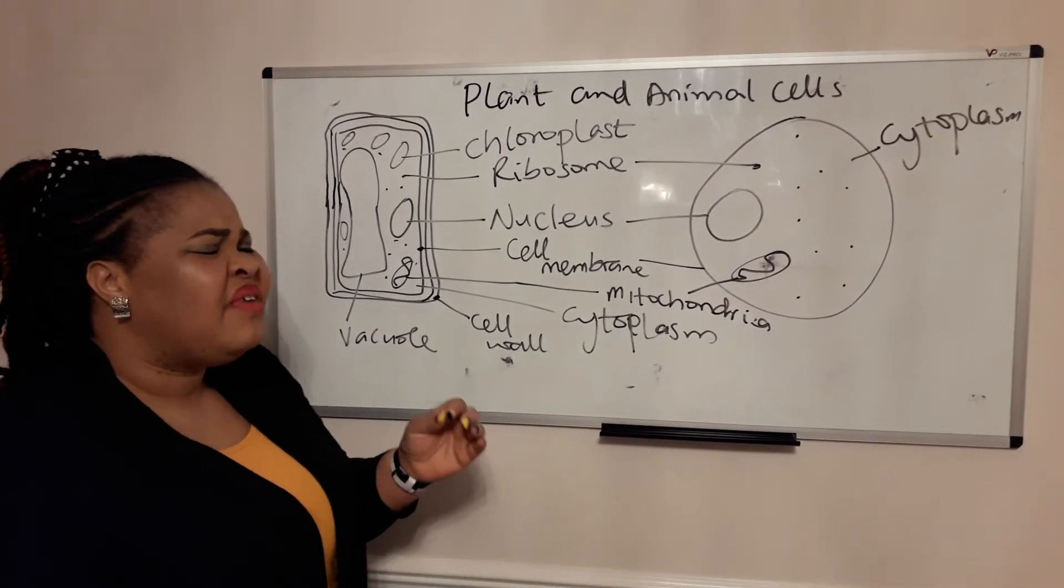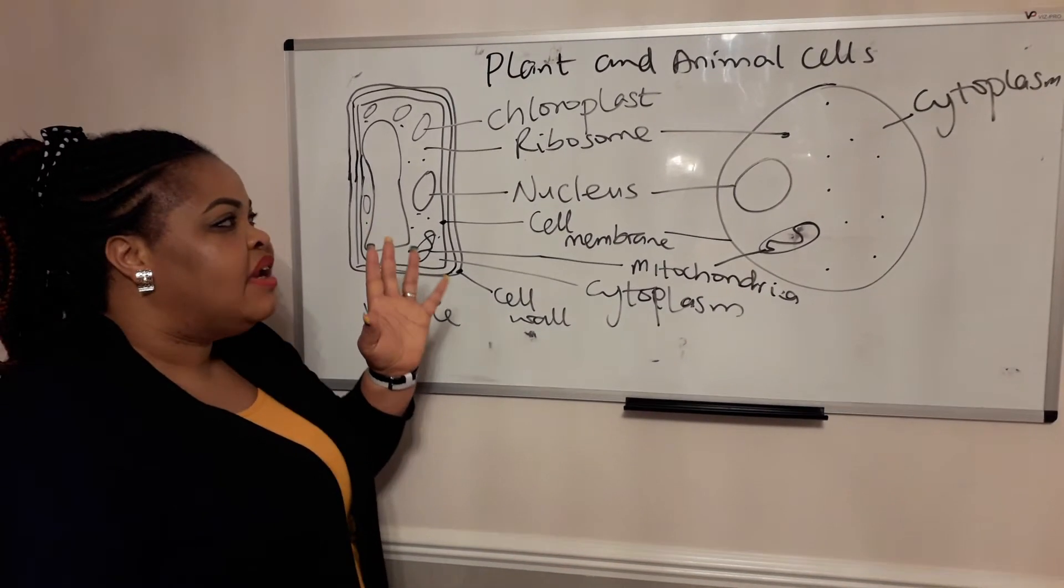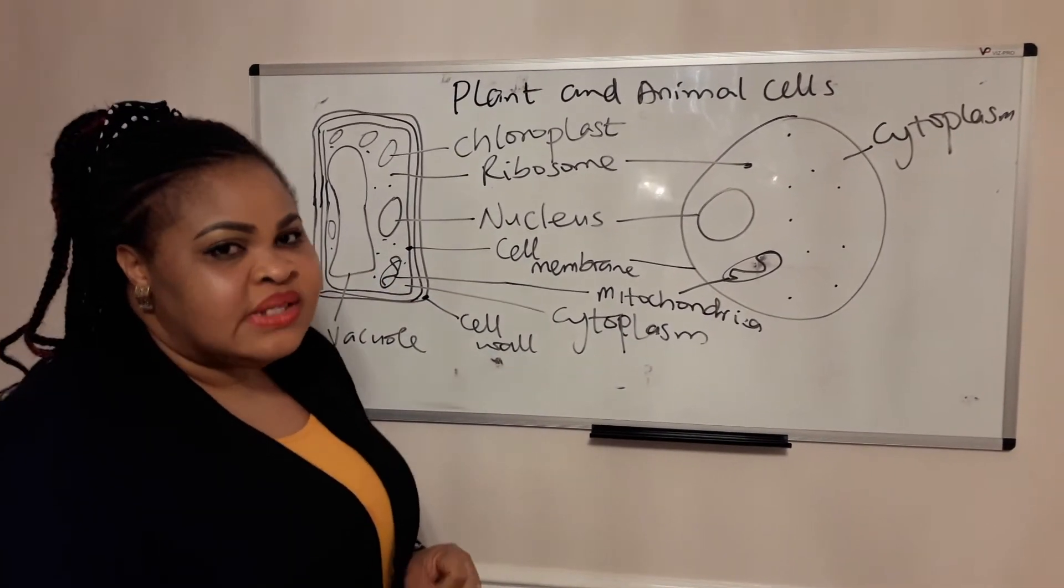If you find vacuoles they will be very small. But the vacuoles in plant cells are very large and filled with cell sap.